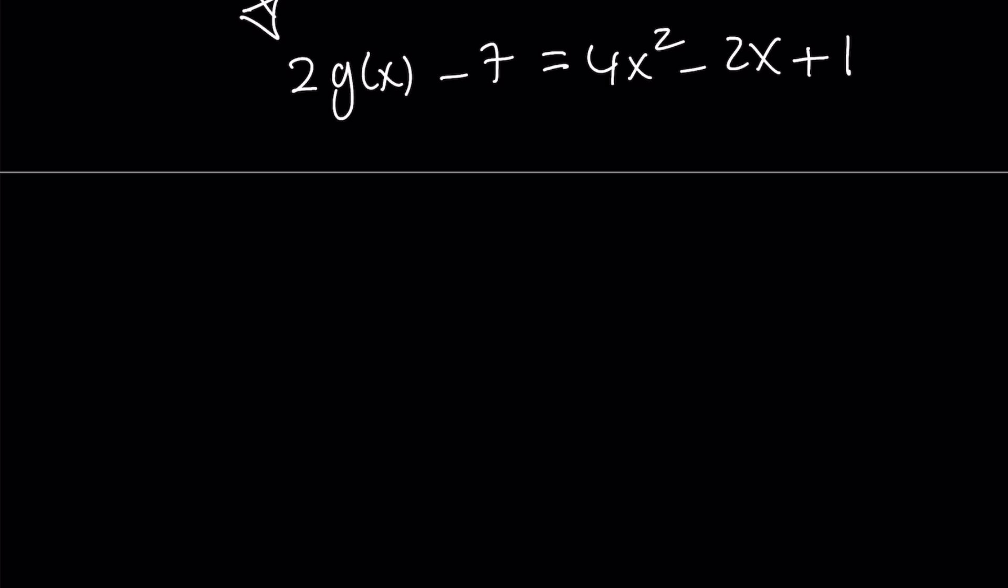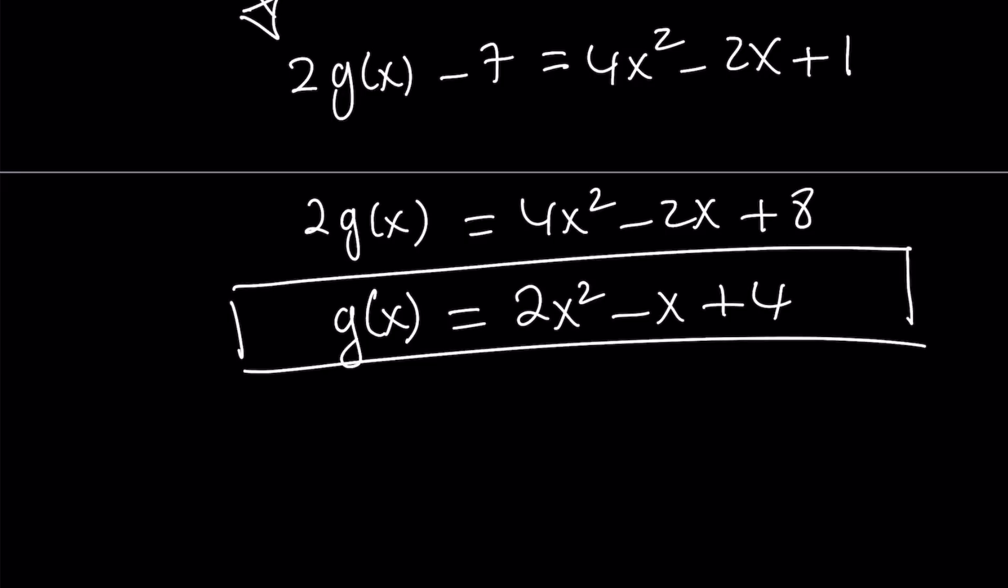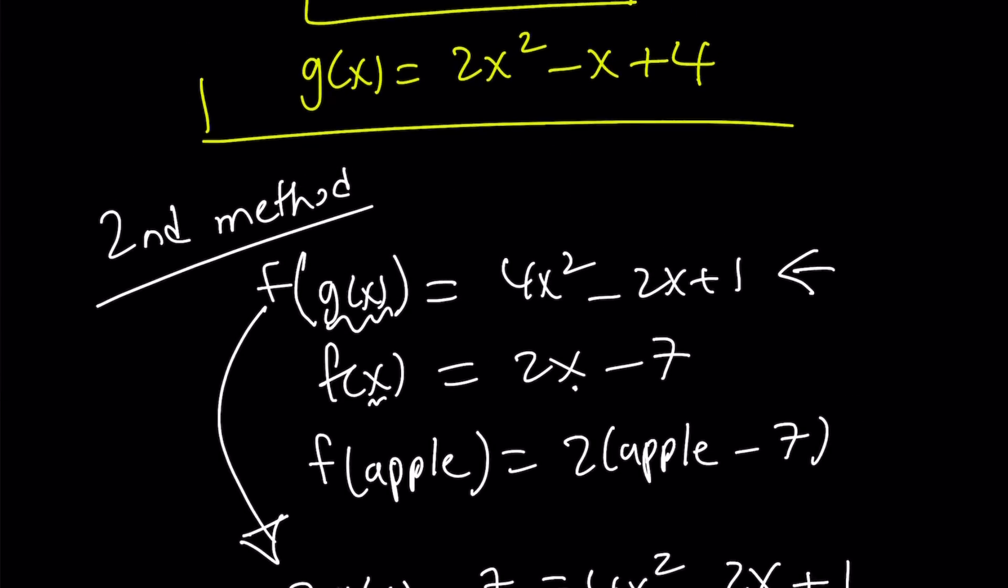Let's go ahead and add 7 to both sides. And we get that. And we can divide both sides by 2. And we're going to be getting g of x equals 2x squared minus x plus 4. And that's going to be the same solution we found with the first method. Obviously, they should be the same, right? Great. Now...